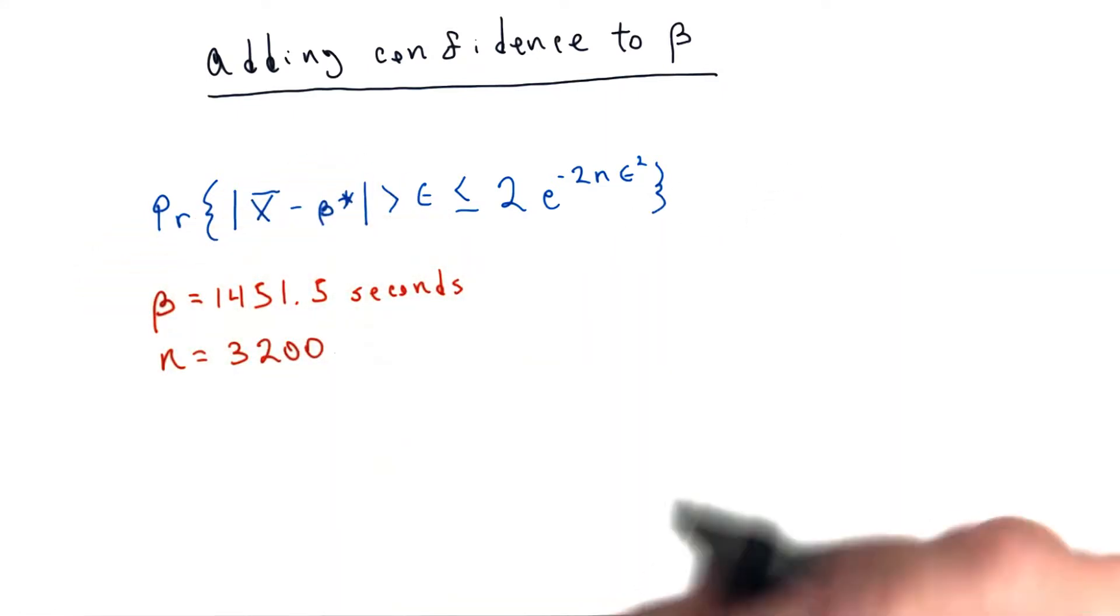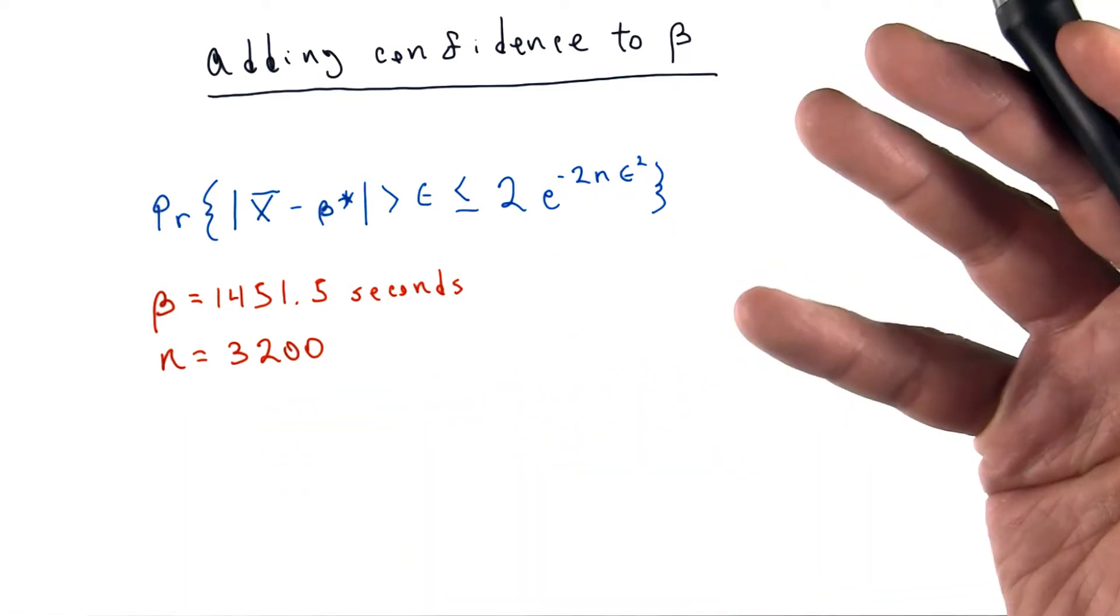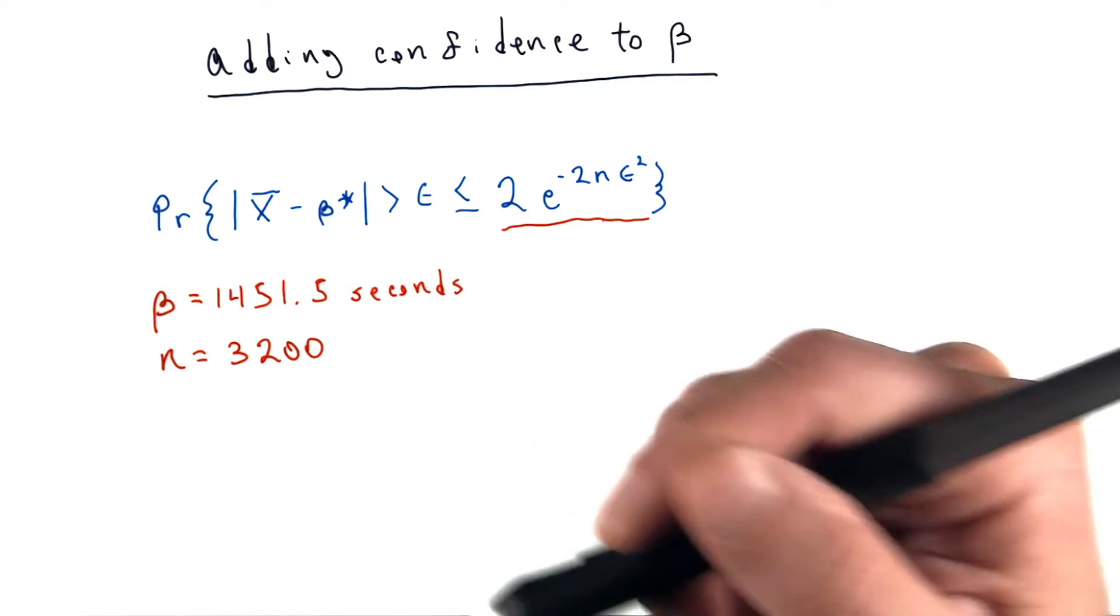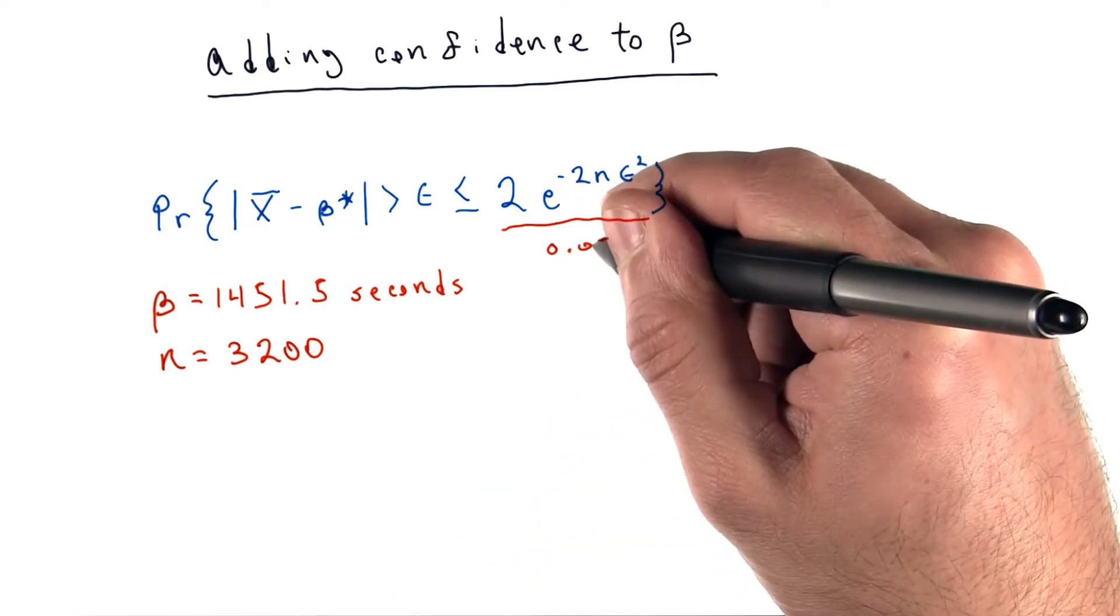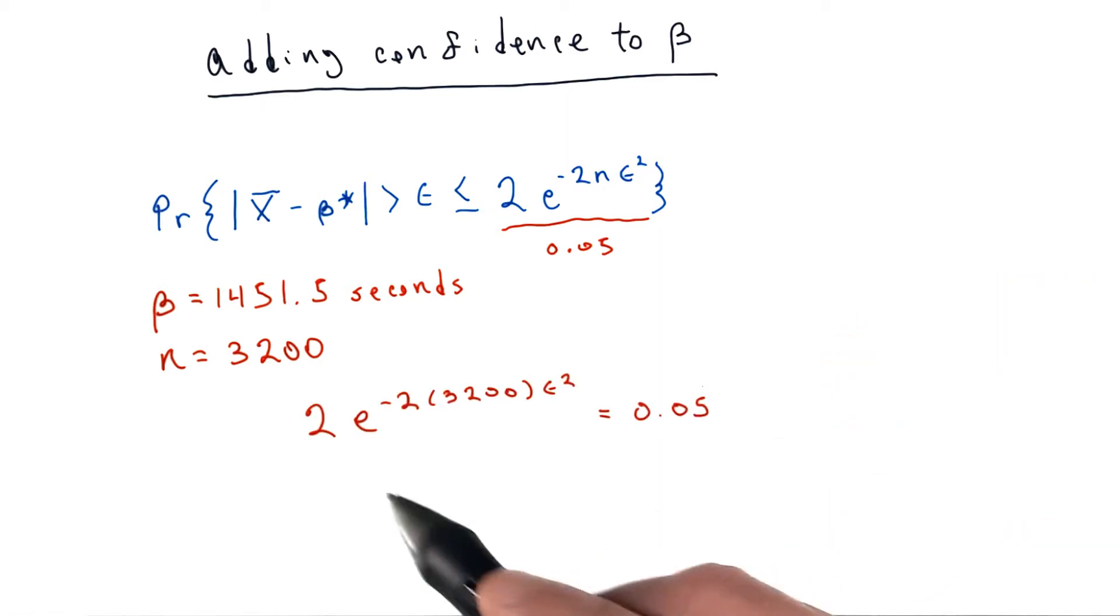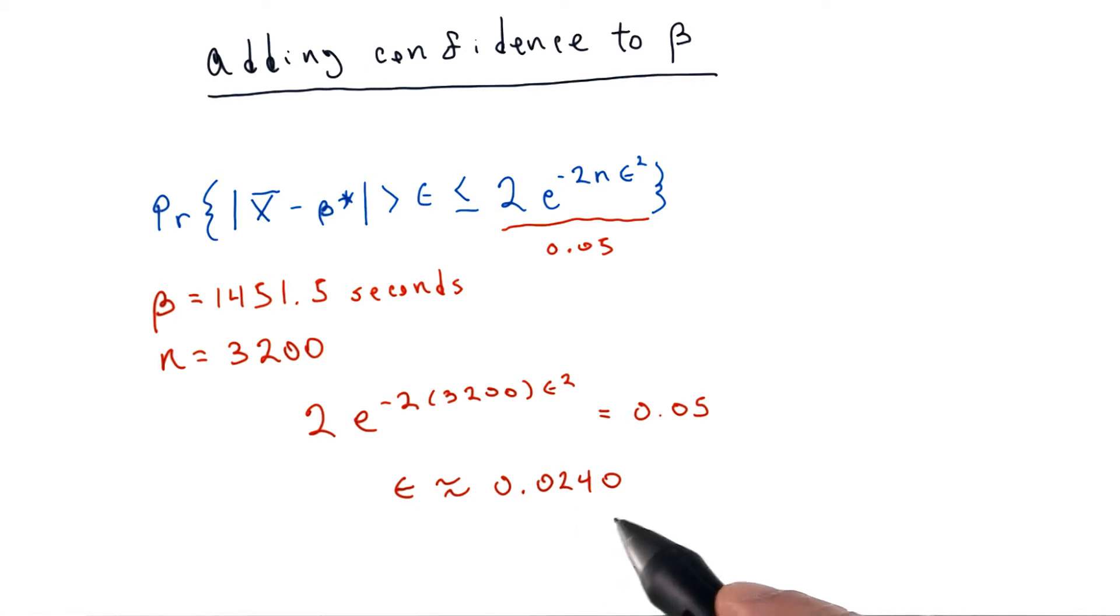First, recall the number of data points we have is approximately 3,200. What we want is for the right side of this expression to equal 5%, or 0.05. Specifically, if you solve this expression for epsilon, you get a value of about 0.0240.